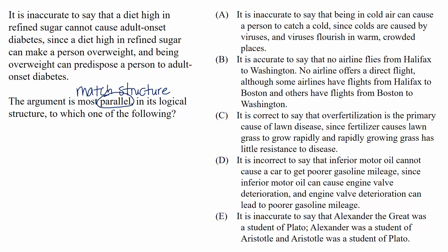It looks like we have a strong signal word for evidence here with the word since. So this part after the word since is going to be our evidence and that leaves the first part for our conclusion. I like to bracket the conclusion so that it really stands out to us. It is inaccurate to say that a diet high in refined sugar cannot cause adult-onset diabetes.